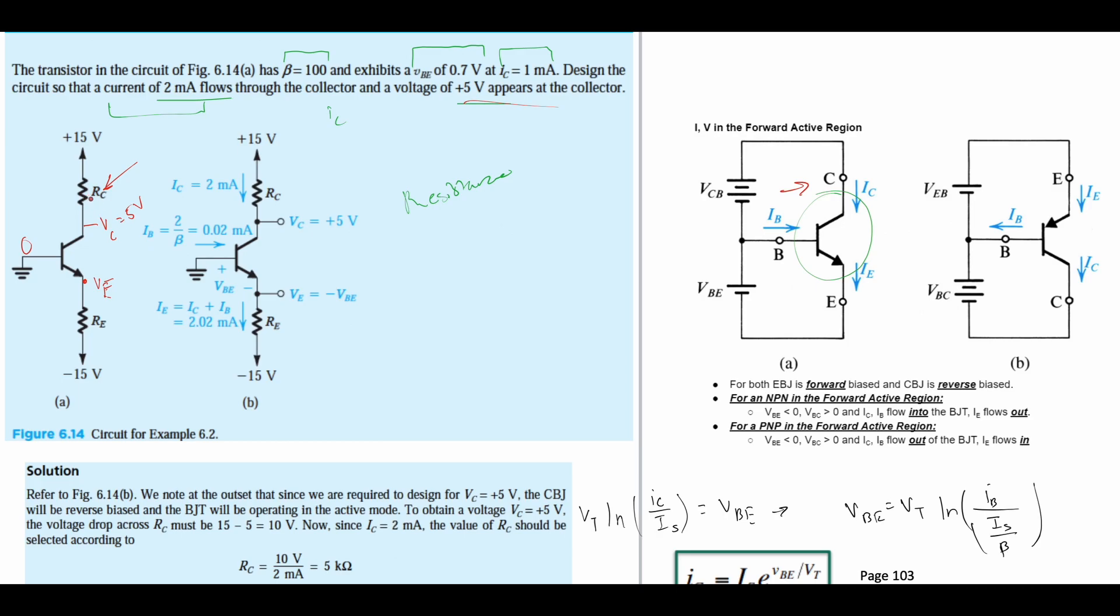Now we need to find our RC. We know RC is just going to be the source voltage minus the voltage we have on the other side, over the current. The current here is 2 milliamps because we want to design the circuit so that 2 milliamps will flow, even though our IC is 1 milliamp.